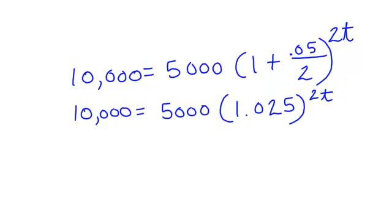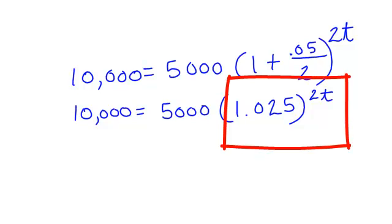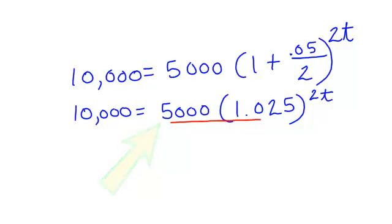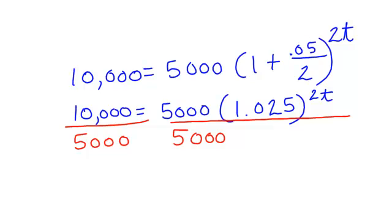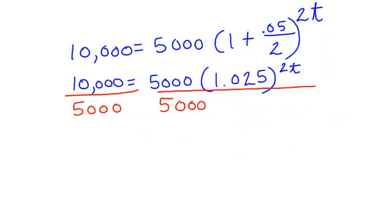Now, my variable is in the exponent. That means I need to take the log or the natural log of both sides. But if I'm going to do that, I need just the 1.025 raised to this exponent. I need to get rid of this 5,000. This 5,000 is not raised to the exponent. Well, we can do that. I will divide by 5,000. But if you divide one side by 5,000, you've got to divide the other side by 5,000. 10,000 divided by 5,000 is just 2. And yes, these 5,000 will cancel out. And I have 1.025 to the 2t.